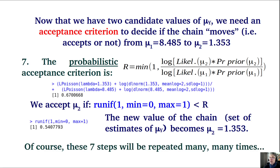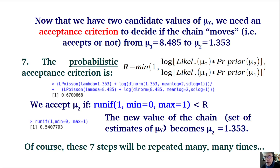These seven steps are repeated many, many times. One feature of this stochastic acceptance rule is that sometimes the chain may even reject, by chance, a parameter value with a large posterior probability. This allows the algorithm to explore a whole range of parameter values in order to uncover the posterior distribution.